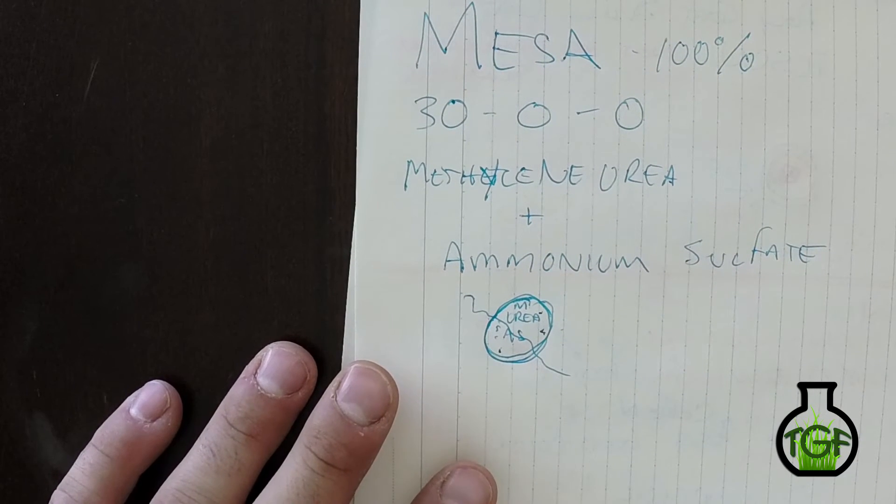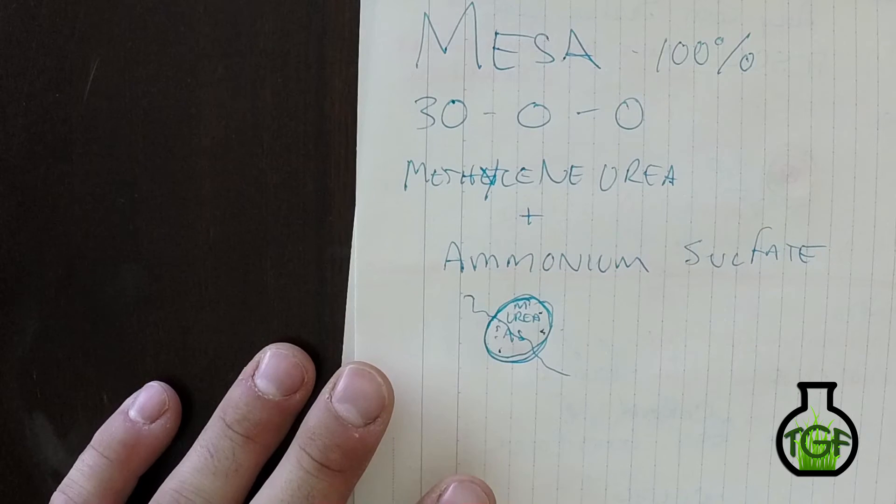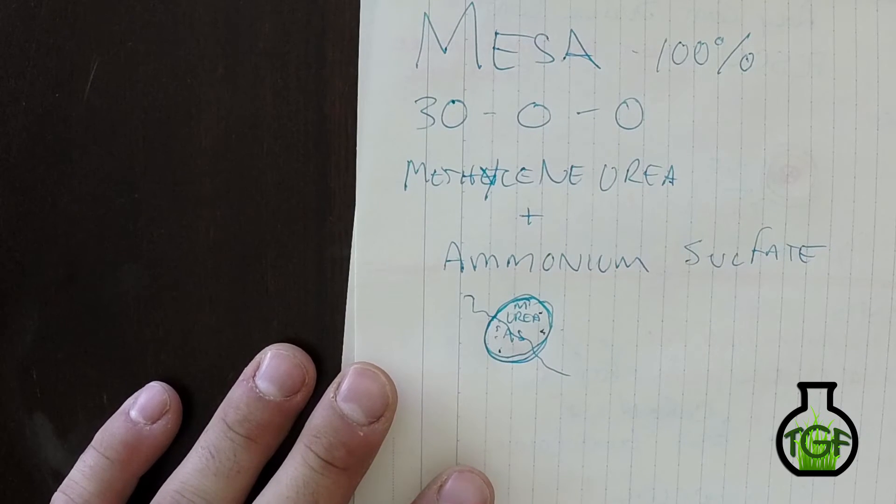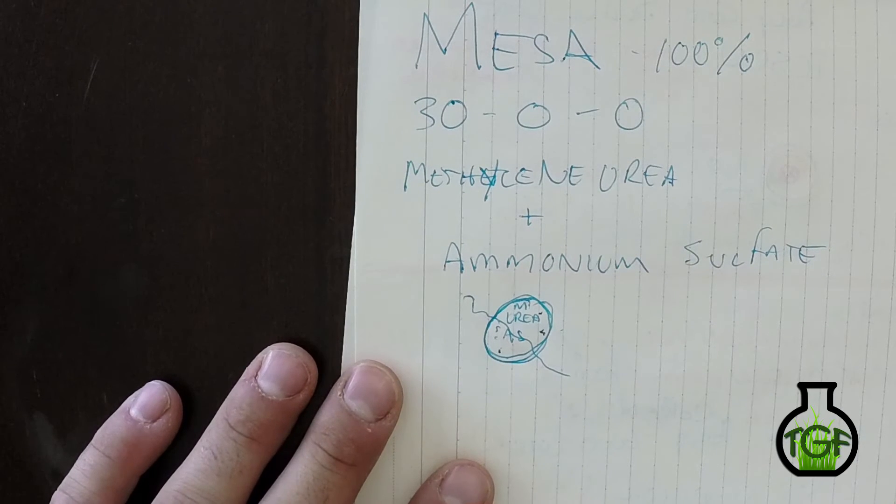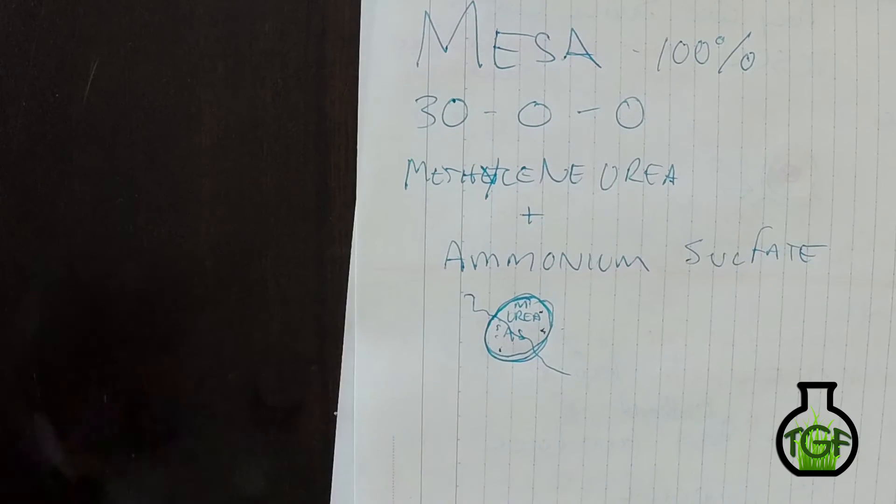Methylene urea is going to provide a pretty slow release because it's going to have to be broken down by microbial activity, whereas straight ammonium sulfate is going to be broken down by water, so it's going to provide a quick release and great color.